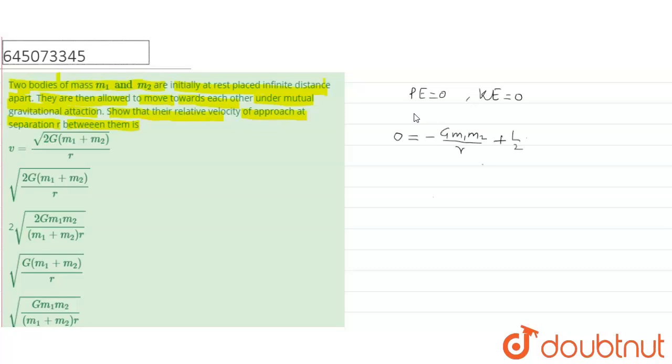Plus half m1 v1 square plus half m2 v2 square. Now they are moving towards each other due to their mutual force of attraction.